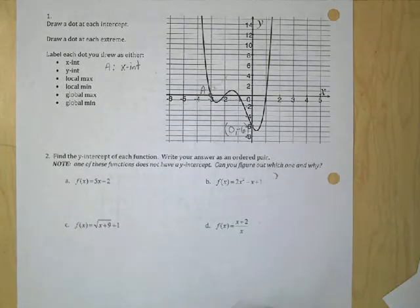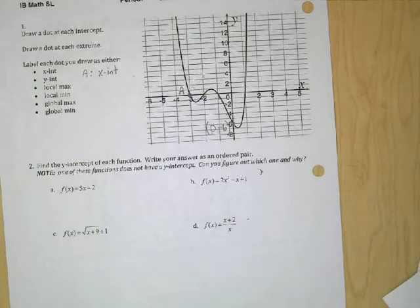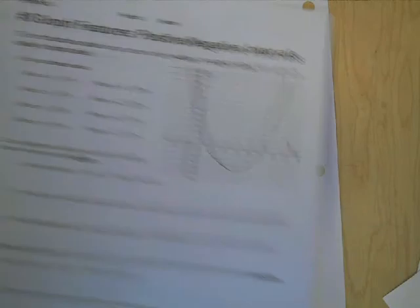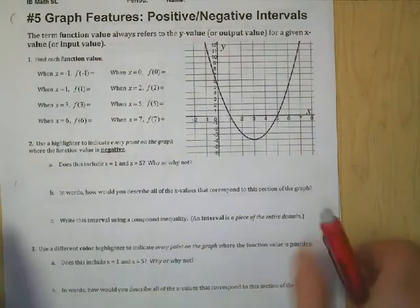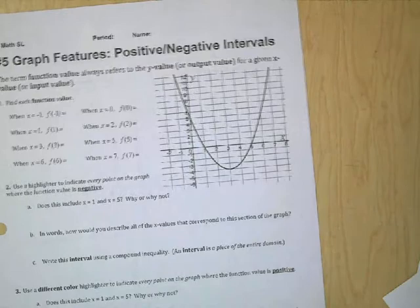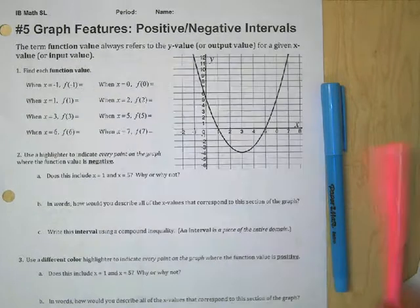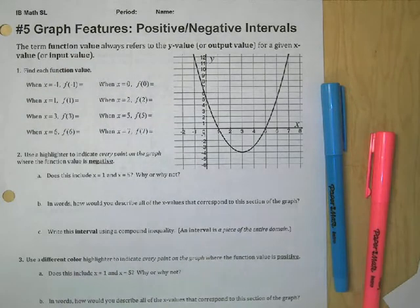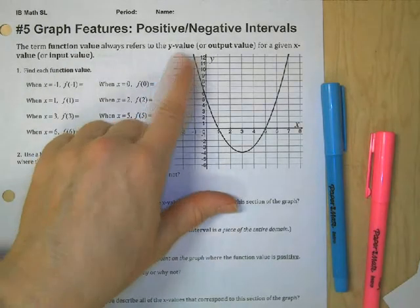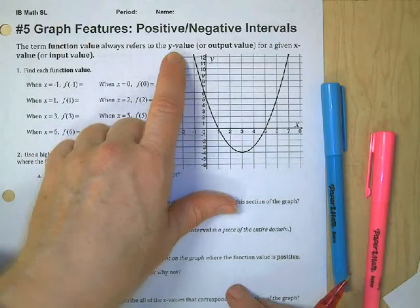All right. So that's number four. Number five. I need to go get a number five. I don't have one. Okay. For number five, you're going to need a couple of highlighters. You're going to be highlighting some values. So get yourself two colors. I'm going to be using blue and pink. Okay. So the term function value always refers to the y value or output value. Okay.